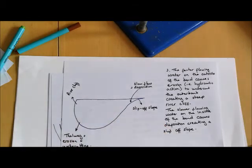On the inside of the bend, we have much slower flow. This causes deposition to occur, which normally creates something that we call a slip-off slope. It looks like a small beach on the inside of the bend. What we end up with then is an asymmetrical channel.